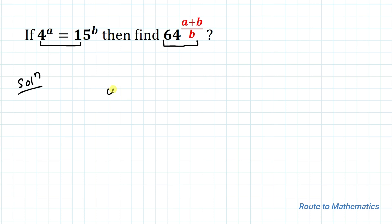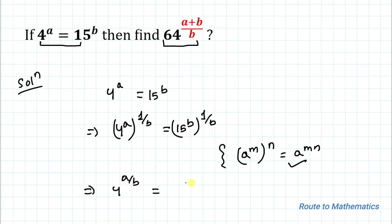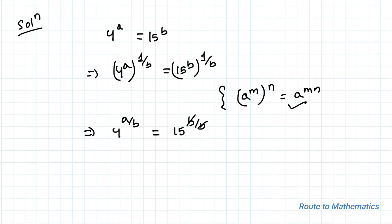We have given 4 to the power a equals 15 to the power b. In the next step, I'll take the 1/b-th power on both sides of the equation. So we can write: 4 to the power a, whole to the power 1/b, equals 15 to the power b, whole to the power 1/b. Using the exponential rule (a^m)^n = a^(mn), we get 4 to the power a/b equals 15 to the power b/b. The b's cancel, giving us 4 to the power a/b equals 15 — let's call this equation 1.